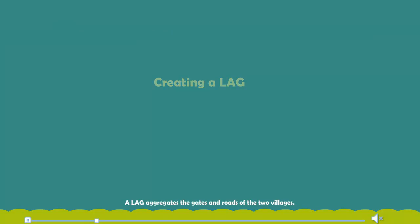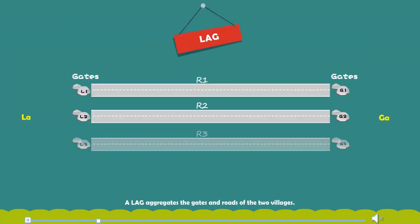A LAG aggregates the gates and roads of the two villages. First, some gates of the two villages are selected and added into the LAG. Then the roads connecting the gates are also added into the LAG.